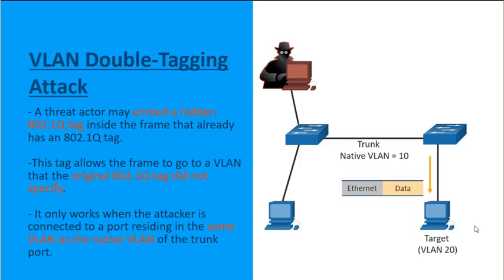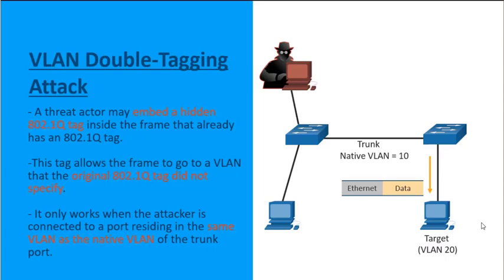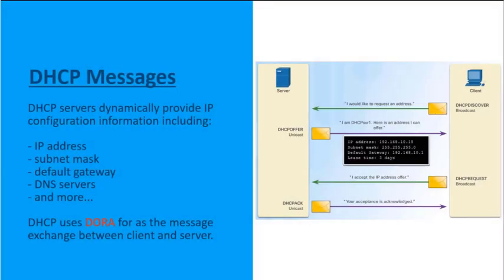VLAN hopping and VLAN double tagging can both be prevented with a few security guidelines. First, disable trunking on any access port going to end devices. Disable auto trunking features like dynamic desirable and dynamic auto, and use manual static trunking as needed. The native VLAN should only be used on trunk links and should never extend to a user device. Note that double tagging only works when the threat actor is on the same VLAN as the native VLAN between switches.